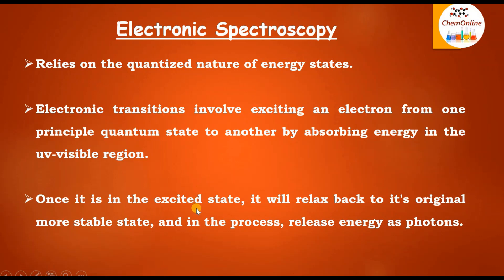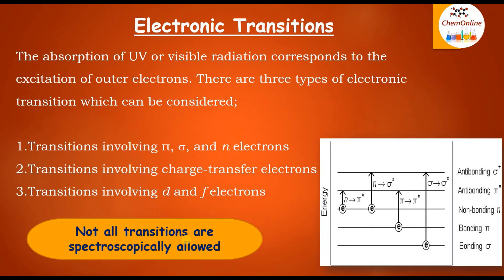Once a molecule is excited to a higher energy state, it will relax back towards the original more stable state and in that process release energy as photons. So this is the basic principle of electronic spectroscopy. When the molecule absorbs ultraviolet or visible radiation, that corresponds to the excitation of valence electrons or outer electrons.